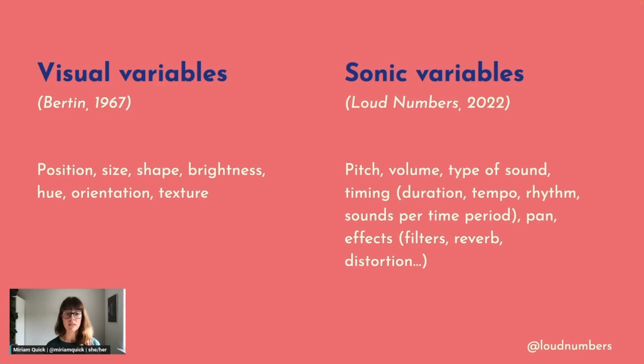It can include pan, that's the spatial position in the audio field from left to right, and it can include numerous effects such as filters, reverb or distortion. All of these things and more can be used to encode and communicate data values. And you can also double or triple encode by using more than one of them at once.